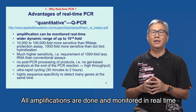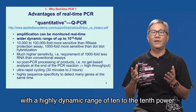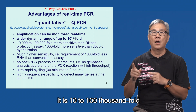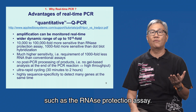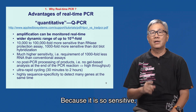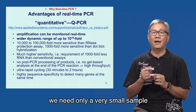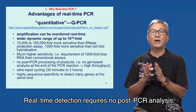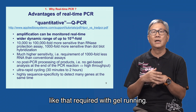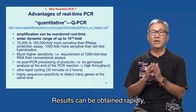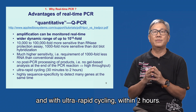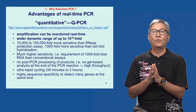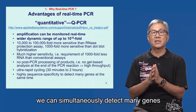All amplifications are done and monitored in real-time with a highly dynamic range of 10 to the 10th power. It is 10 to 100,000 times more sensitive than other assays, such as the ribonuclease protection assay. Because it is so sensitive, we need only a very small sample or a minimal amount of RNA. Real-time detection requires no post-PCR analysis like gel running. Results can be obtained rapidly, with ultra-rapid cycling, within two hours. When gene-specific primers are used, we can simultaneously detect many genes at the same time.